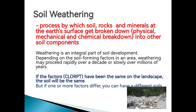Depending on the soil forming factors in a given area, weathering may proceed rapidly over a decade or slowly over a million years. The weathering process differs for each rock because the factors affecting it also differ. If the factors we discussed in previous videos — climate, living organisms, relief, parent materials, and time — are the same across a landscape, the soil will be the same. But if one of these factors differs, you can expect different soils.